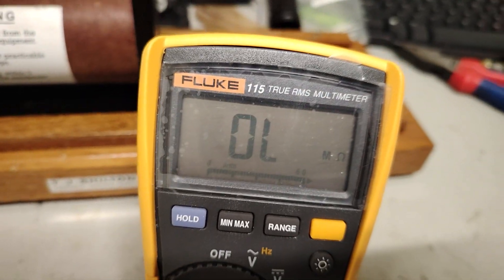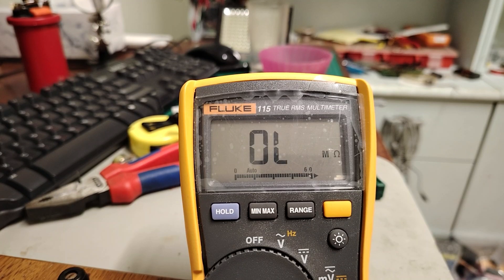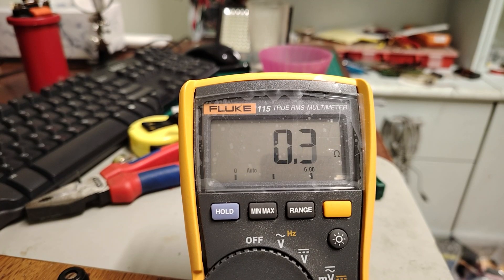Alright, so I got my multimeter here and we're going to measure the resistance of the primary and secondary. So the resistance is about 0.3 ohms and the secondary is 6.9K.